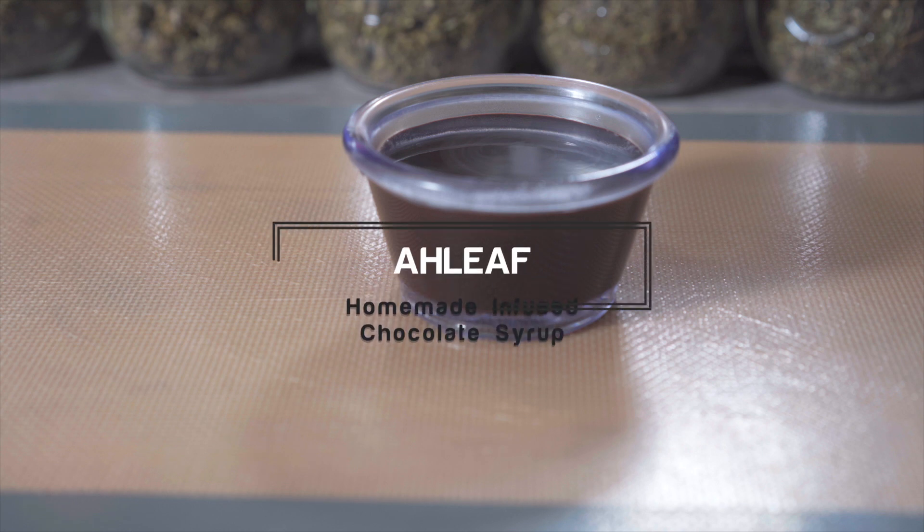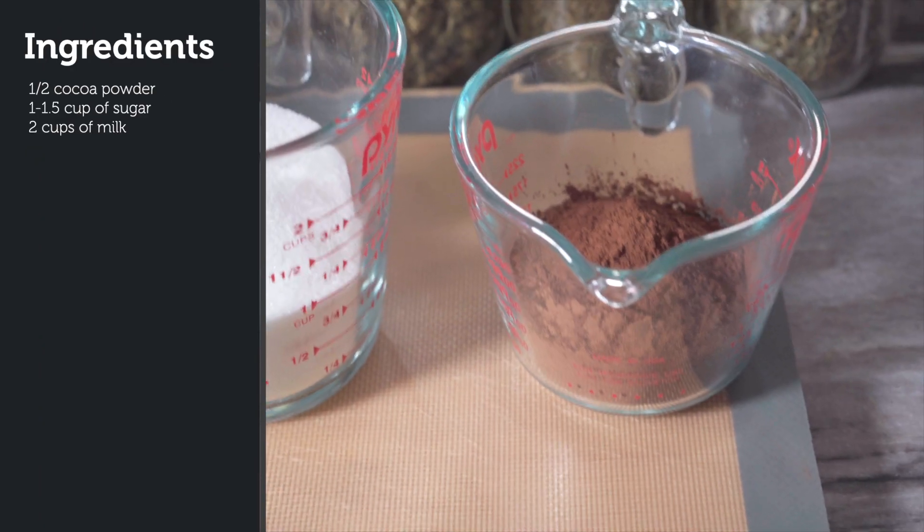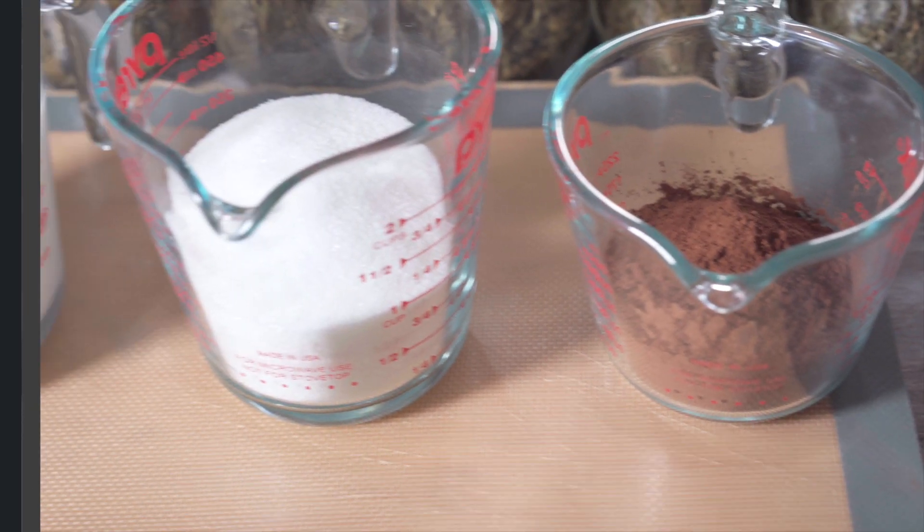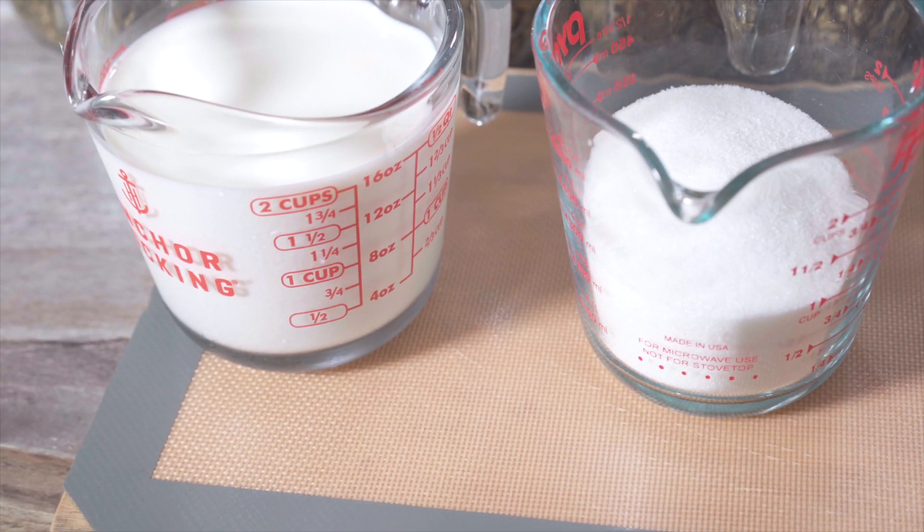What it do guys, today we're going to make homemade infused chocolate syrup, so let's get into it. The ingredients to make this recipe would be a half a cup of cocoa powder, one cup of sugar, and two cups of milk.